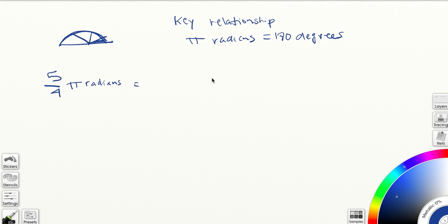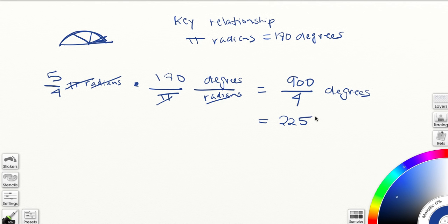And so let's do 5 over 4 pi radians into degrees. So we need to know how many degrees there are per radians. And we know that there are 180 degrees per every pi radians. So pi radians cancel out. This is multiplying, not equals. So then 5 times 180 is 900, and that'll be over 4 degrees. And 4 goes into 900, 225 times. So 5 over 4 pi radians equals to 225 degrees.